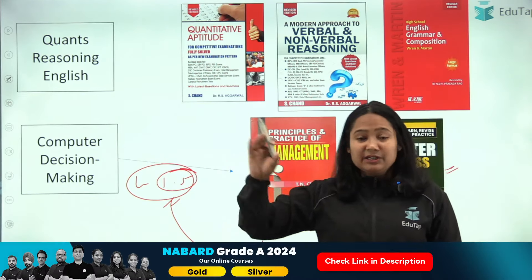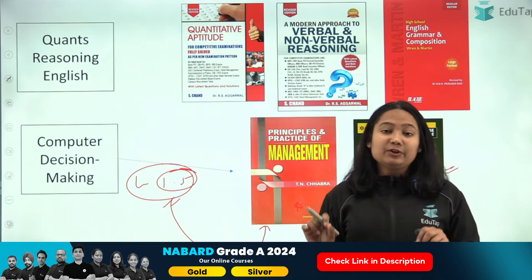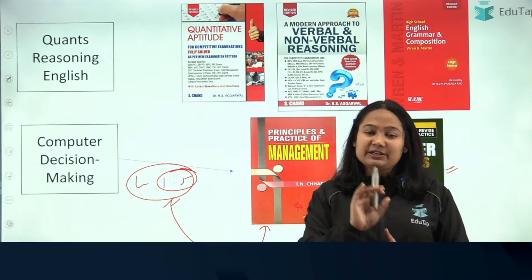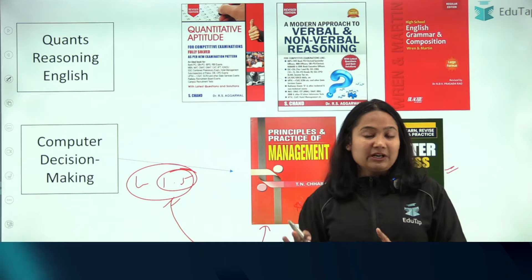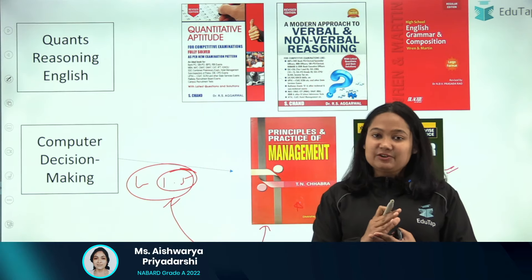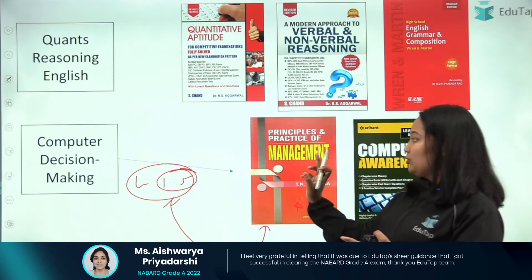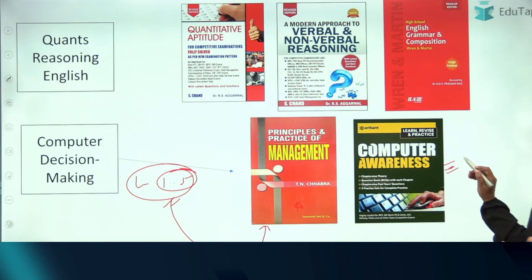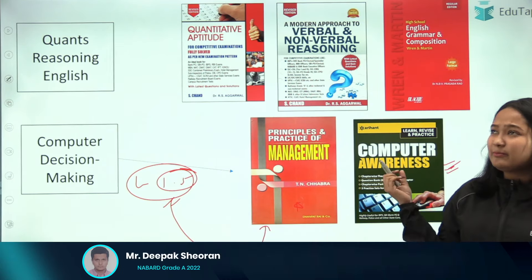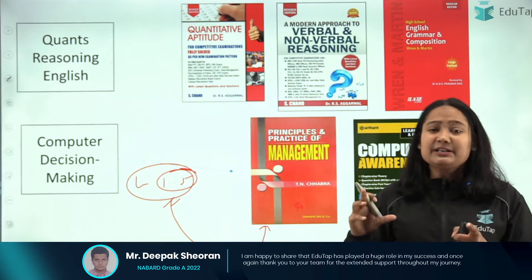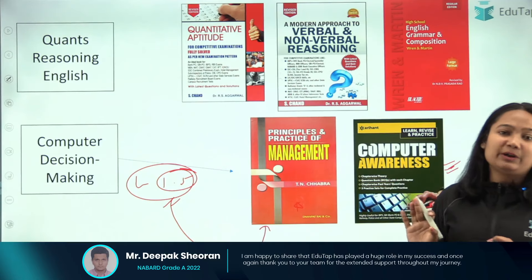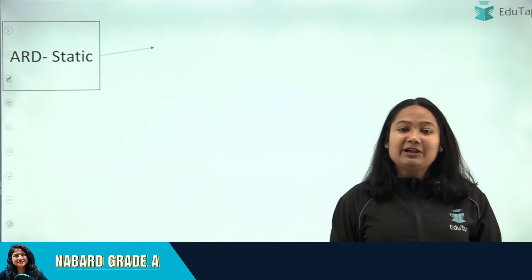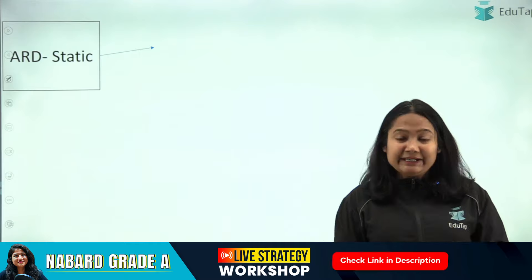Since decision making is a new subject, I would recommend being very selective. First, look at previous year questions — you need to figure out which are the important topics to cover in decision making, and only cover those topics from this particular book. For computer awareness, the chapters are well covered and the book isn't too heavy. You can practice MCQs from it as well.